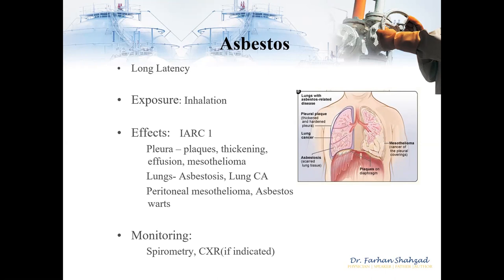Let's come to asbestosis. Asbestos is a fibre that was quite widely used and probably still is in the third world for construction. Asbestos fibre inhalation causes asbestosis, which is characterized by chronic pulmonary interstitial fibrosis. The problem with this exposure is that the effects are not imminent or obvious in the immediate time post-exposure. There is a latency period of 25 to 40 years, and there is a clear dose-response relationship with the amount of exposure leading to asbestosis.